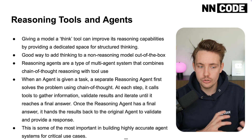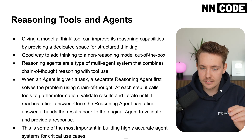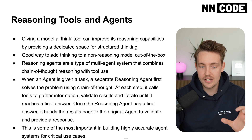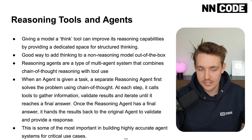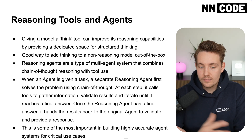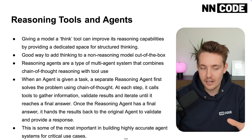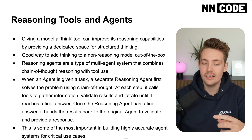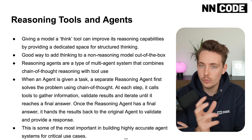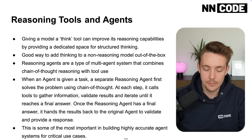We can then build memory, multi-user permissions, and all of that around it as well — but that's more for the software system layer. When an AI agent is given a task, a separate reasoning agent first solves the problem using chain of thought. At each step, it calls tools to gather information, validates the results, and analyzes what each agent is generating. It iterates until it reaches a final answer, then hands the results back to the original agent to validate and provide a response.